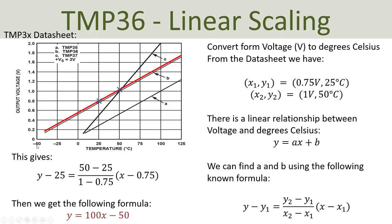From the chart in the datasheet we see the relationship between the voltage and the temperature in degrees Celsius. This relationship is linear, so we can use a basic formula to find the linear relationship between the voltage and the temperature. We just find two points on the curve, put these values into the general formula, and we end up with a basic formula that gives the relationship between voltage and temperature in degrees Celsius.